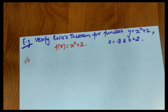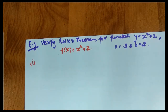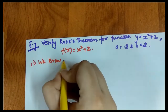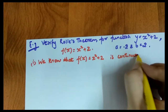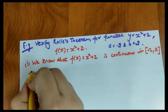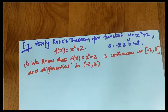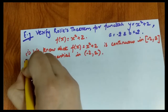The first condition is that our function should be continuous in the range [a, b]. You know that all polynomial, quadratic, and cubic equations are continuous. In a board exam, we must write each condition properly. So we write: f(x) = x² + 2 is continuous on [-2, 2] and differentiable on (-2, 2). Hence, the first and second conditions are satisfied.